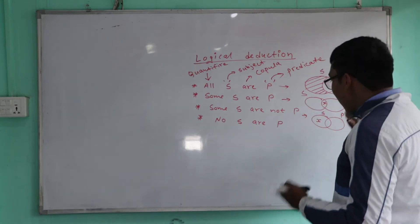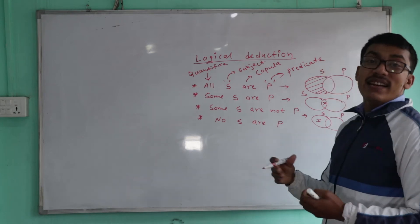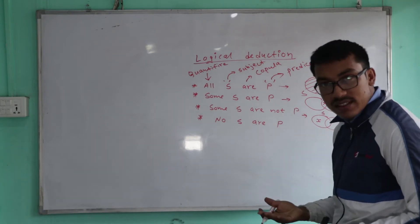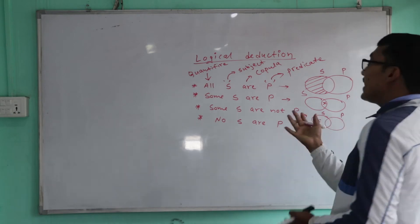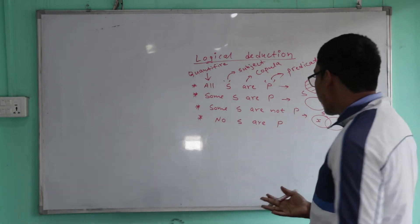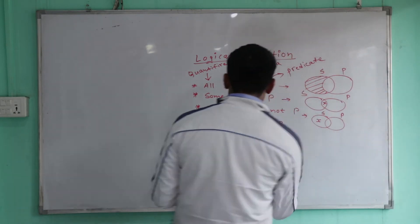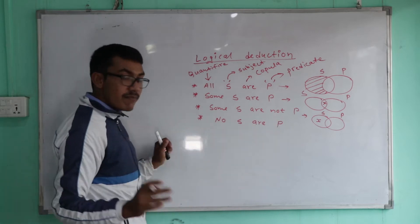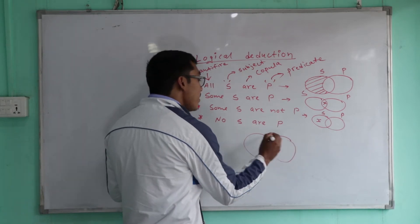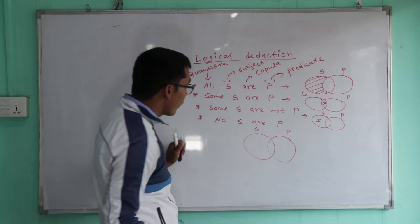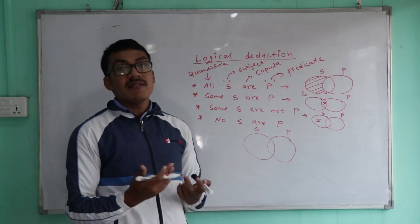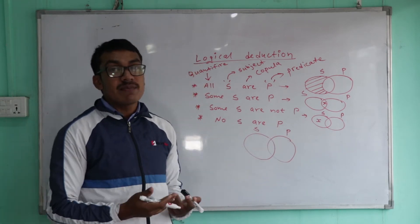If you have any elements or any objects which are only in S and not in P, then there would be no common part. And the last type is 'No S are P' — S and P will have no common overlap.